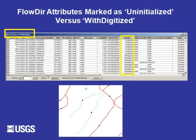Here we have an example of 'uninitialized' versus 'with digitized.' You will notice many features attributed as 'uninitialized' — they will not participate in the network.